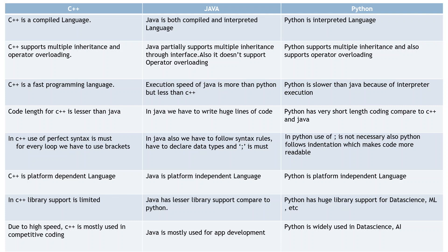The second difference: C++ supports multiple inheritance and operator overloading. Java partially supports multiple inheritance — it does not support it directly, but supports it through interfaces. Java also does not support operator overloading. Python supports both multiple inheritance and operator overloading. This is a very important point to remember when answering differences between these three languages.